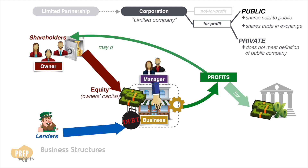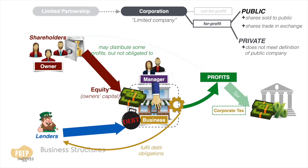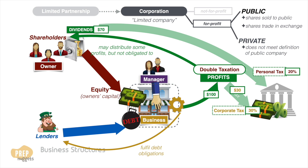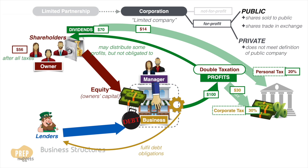Be it public or private, a for-profit corporation may distribute profits to shareholders, but has no obligation to do it. After paying off debt obligations and corporate taxes, part of the remaining earnings may be distributed to shareholders as dividends, which may be taxed as personal income, depending on the country. If that is so, a corporation's profits may be subject to double taxation. For example, if corporations pay 30% tax on gross profits and individuals pay 20% tax on dividends received, for every $100 earned by the company, $30 go as corporate tax. And if the remaining $70 go to shareholders as dividend, another $14 is paid out as personal income tax. The shareholders only receive $56 out of the $100 profit after all taxes, so the effective tax rate is 44%.